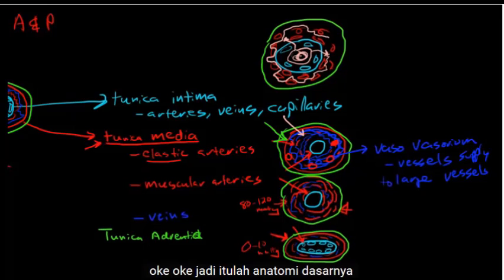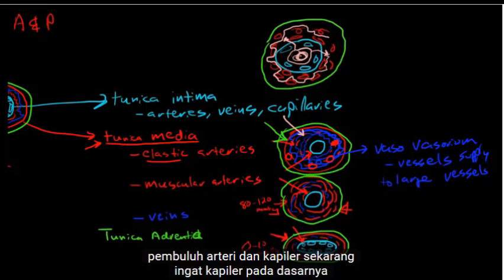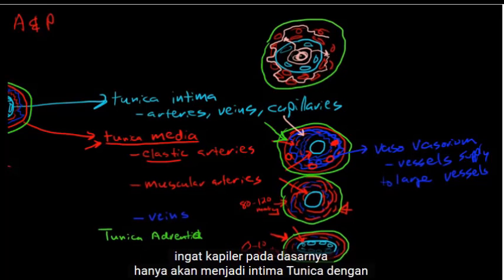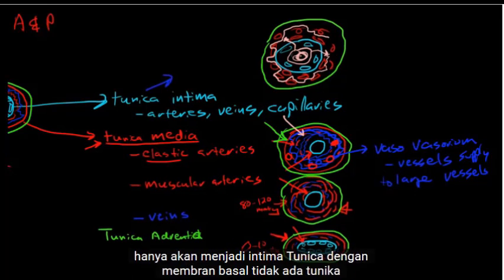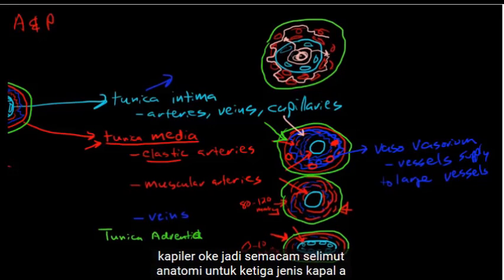That's the basic anatomy of arteries, veins, and capillaries. Remember, the capillary is essentially just a tunica intima with a basement membrane — there is no tunica media or tunica adventitia for capillaries. So that covers the anatomy for all three vessel types.